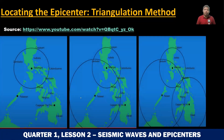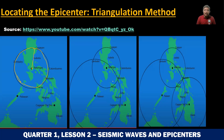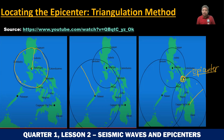Then they do this: from the Batangas station, they measure 440 kilometers — that will be the radius in any direction — and they create a circle. Then from Palawan, they create another circle based on how far the epicenter is. Then from Davao as well, another circle is drawn. Where the three circles intersect — there is the epicenter of the earthquake. Based on the data, the epicenter was in Masbate.